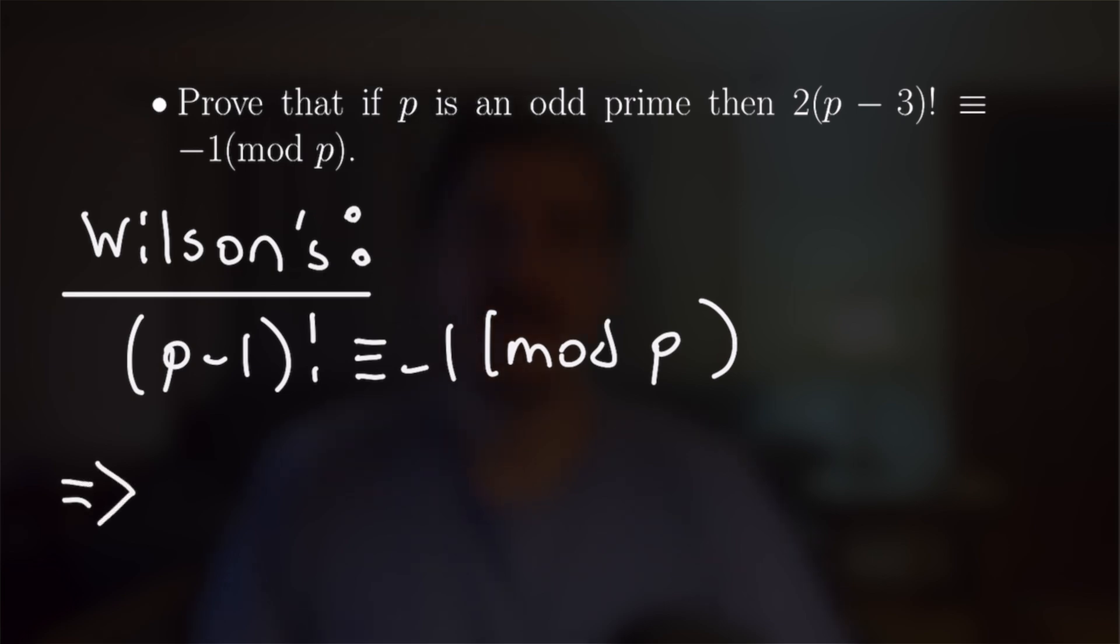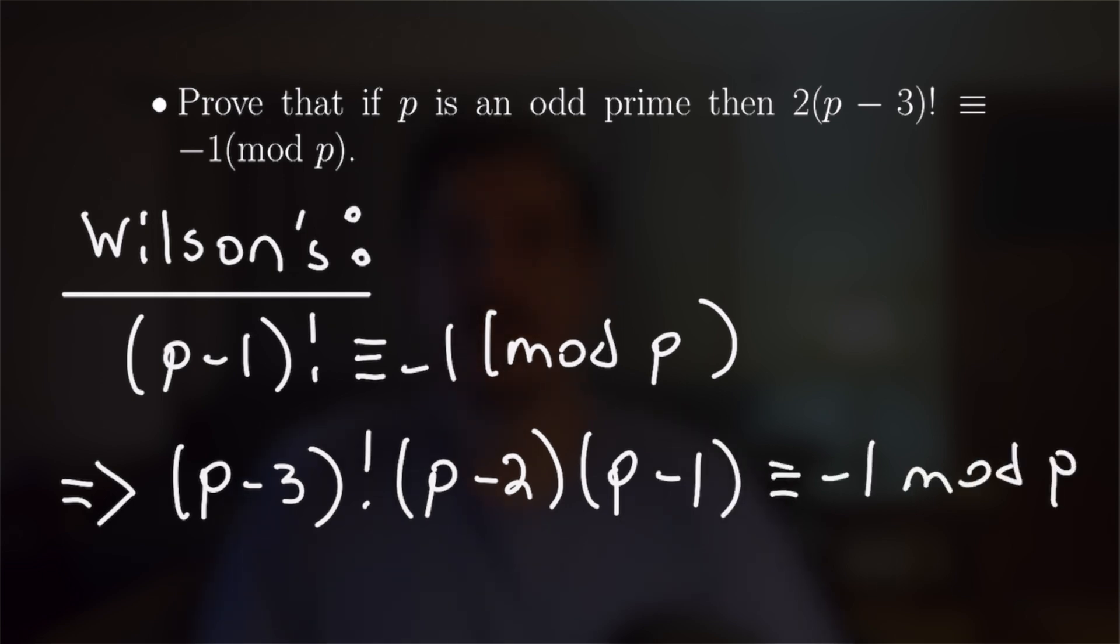Now by extracting the last two terms in this factorial, we can rewrite (p-1)! as (p-3)!(p-2)(p-1) is congruent to -1 mod p. Now we're going to multiply (p-2) and (p-1) out to get p² - 3p + 2. And that's of course times (p-3)! is congruent to -1 mod p.